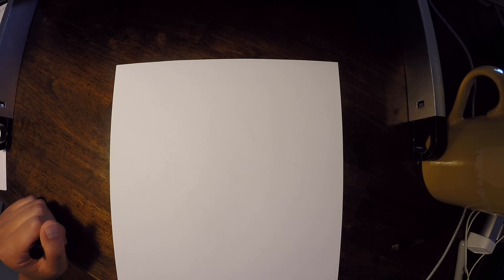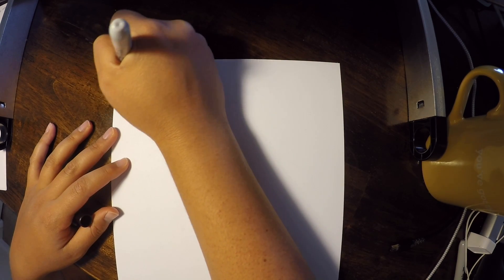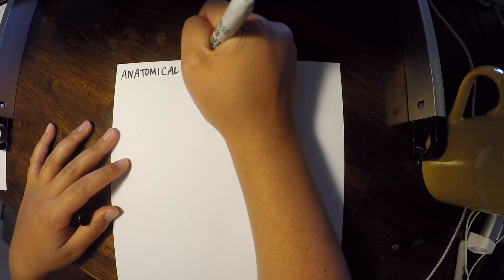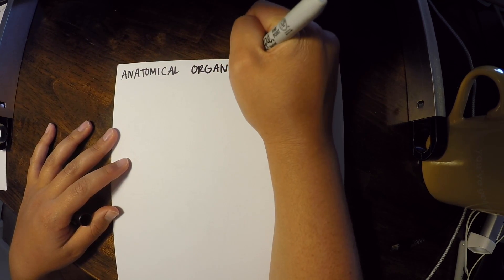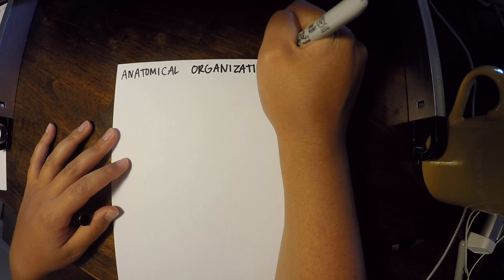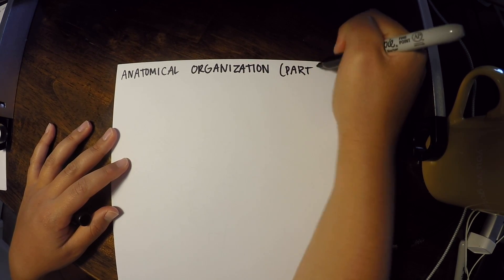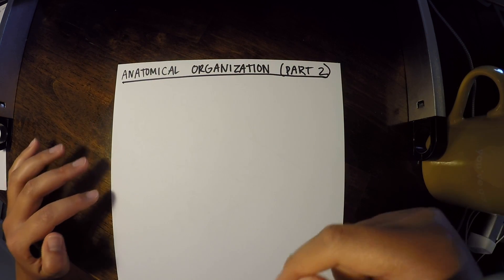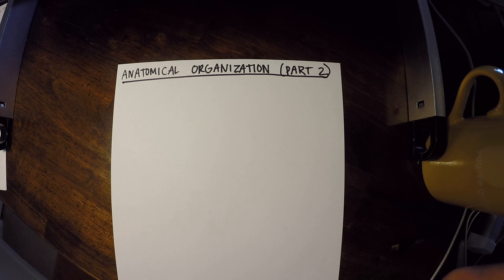This is part two of our anatomical organization lesson. I wanted to separate them out because this is really a lot of terms. Before we learned terms, but it was in relationship to different drawings that we would write. This is really a list of terms that I'm going to write out for us to cover in general without pictures.